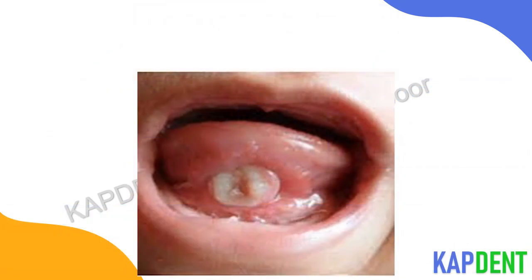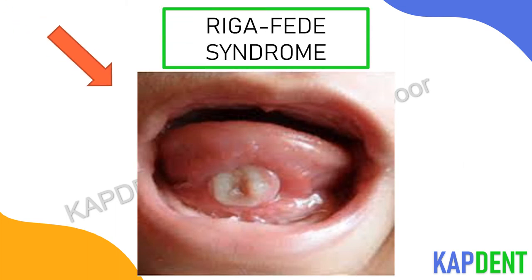These premature teeth tend to cause ulceration on the ventral surface of the tongue or even on the inner aspect of the lower lip. This is called Riga-Fede syndrome. These structures are usually not extracted and are preserved owing to the low vitamin K levels in the infant. If any discomfort is caused to the mother, these teeth are either trimmed down or capped with composite.